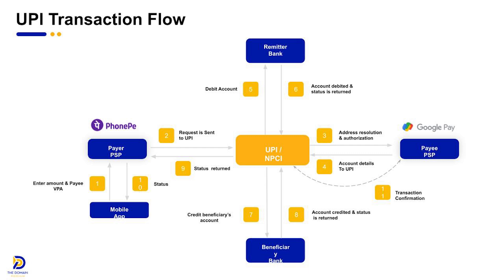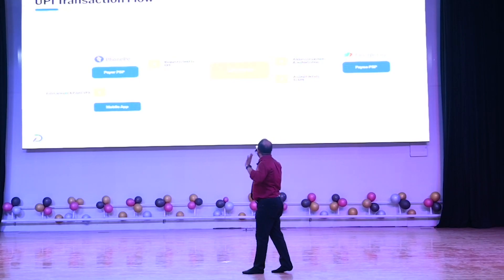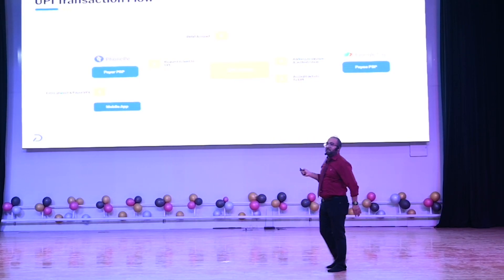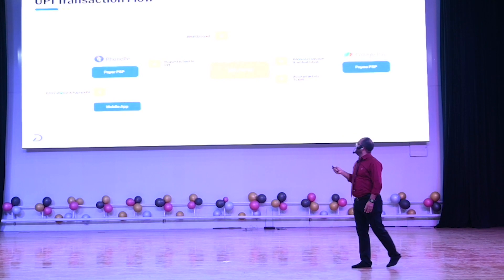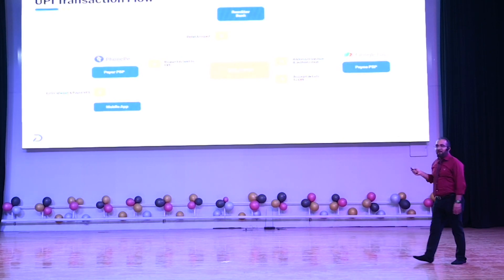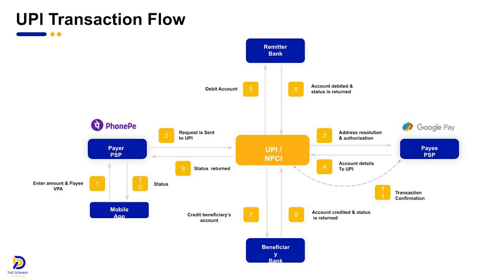One is the account to be credited. NPCI will then send a debit transaction to the remittance bank and debit the account. Subsequently, they will send a credit transaction to the beneficiary bank and credit the account. In total, your transaction is done in eight steps.